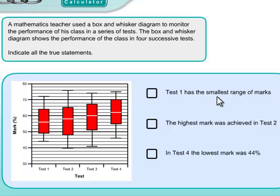So test one, does it have the smallest range of marks? Now the range is just simply the difference between the highest score and the lowest score. Now we don't have to worry ourselves of working out exactly what the difference is. For this, we can just look at it by eye and say, well, okay, look at test one.